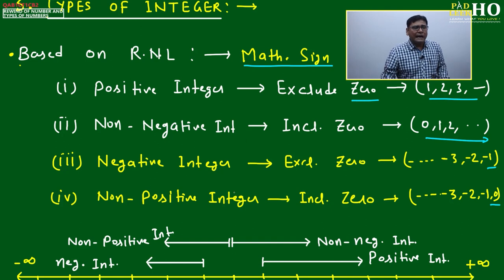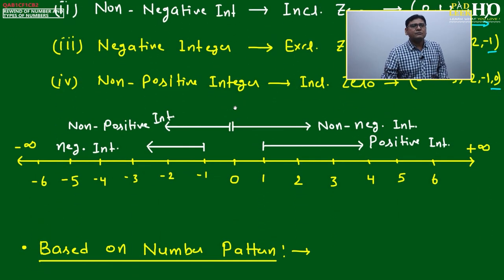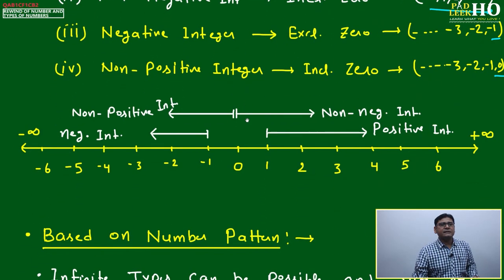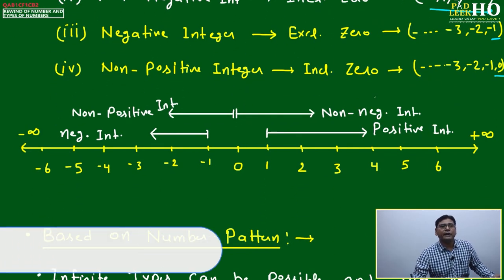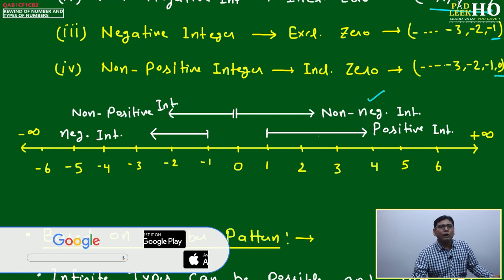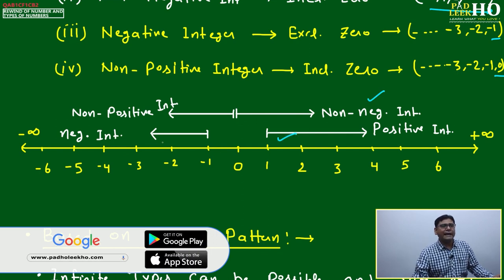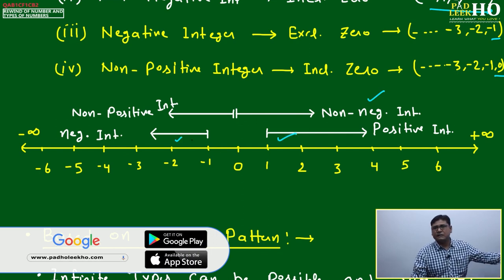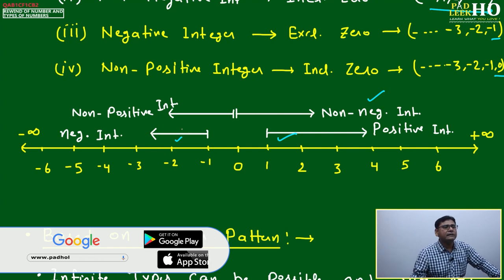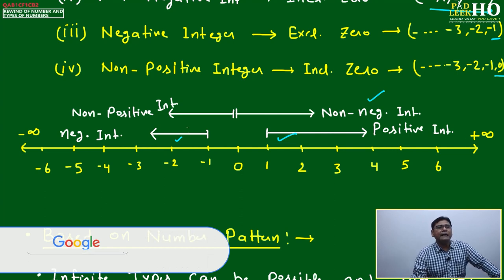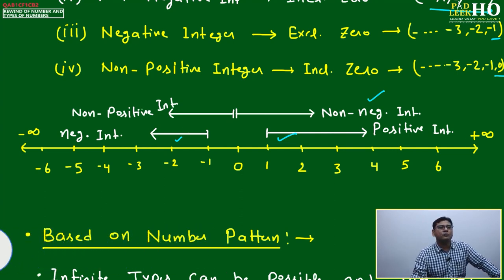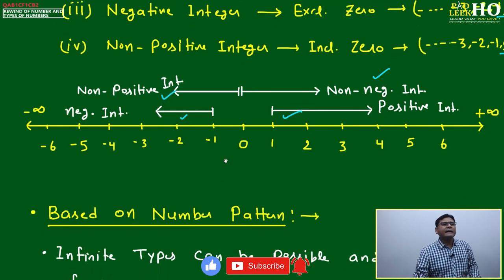On the real number line: at zero it is non-negative; at one and above it is positive; at minus one and below it is negative; and starting from zero going negative it is non-positive. These are the four types.